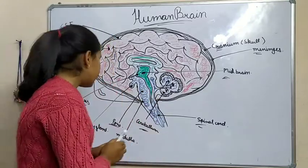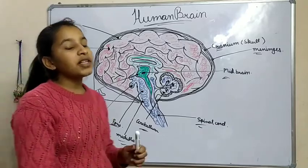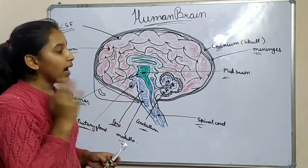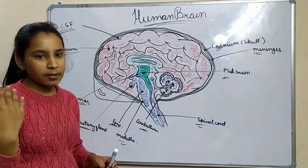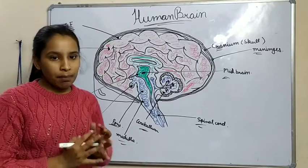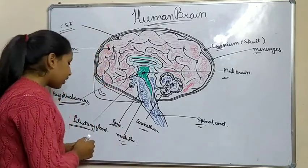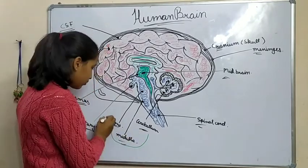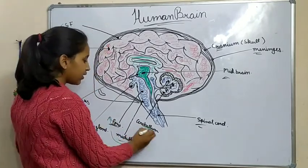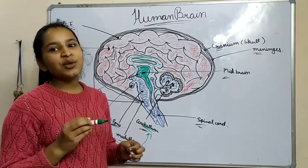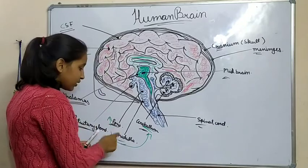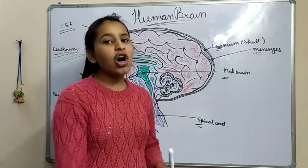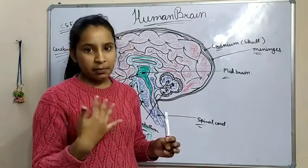The next is hindbrain. Hindbrain is present at the back side of our head. It also has three main parts: pons, medulla, and cerebellum. The hindbrain is situated at the back side of our head.